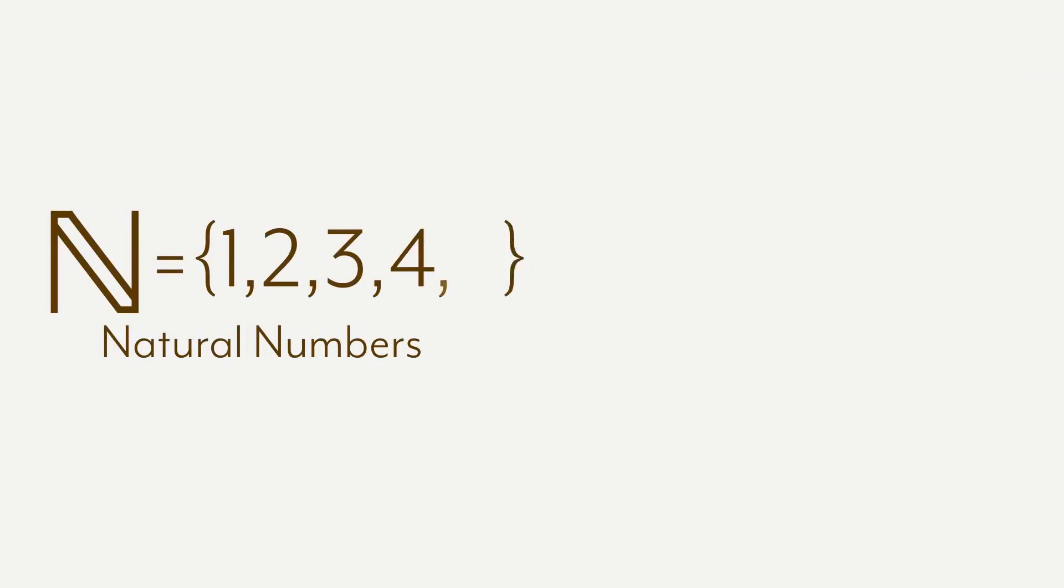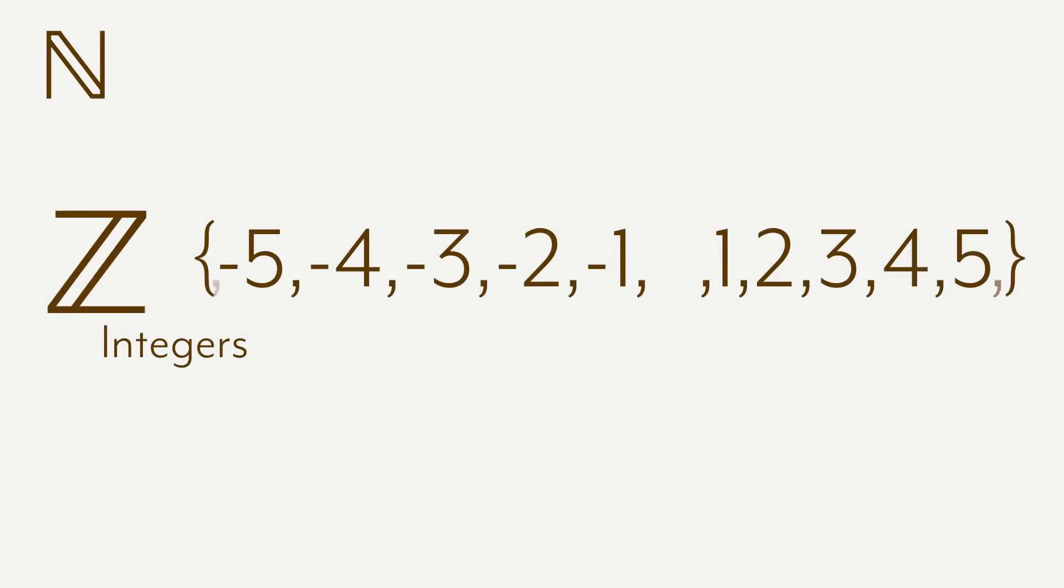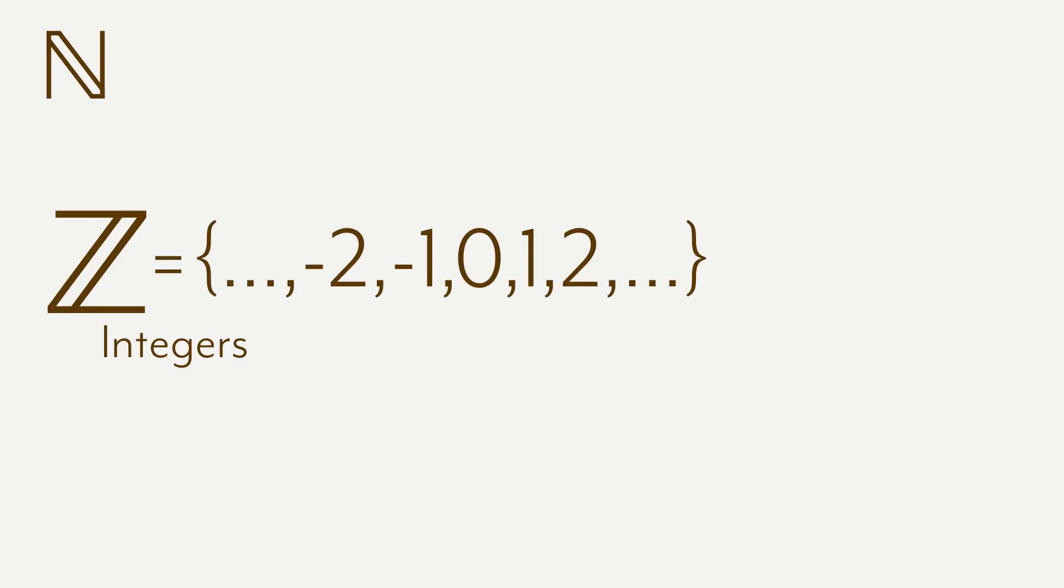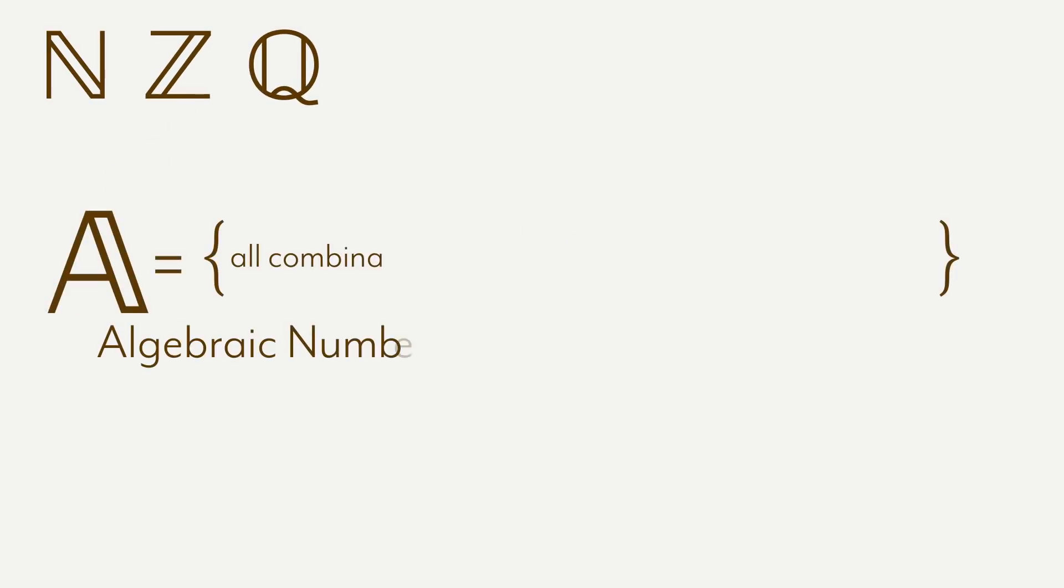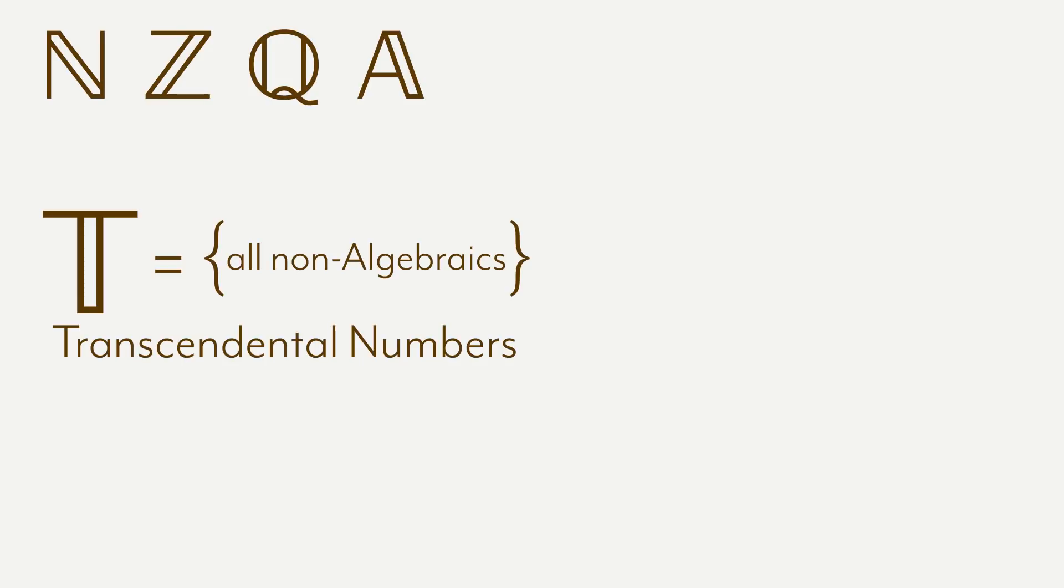Last episode we talked about different number sets. Naturals, which are the whole counting numbers. Integers, which are both positive and negative whole numbers, with zero. Fractions, which are ratios of integers. Algebraic numbers, which are numbers built from any combination of integers and operations. And transcendentals, which is basically everything else, like pi.